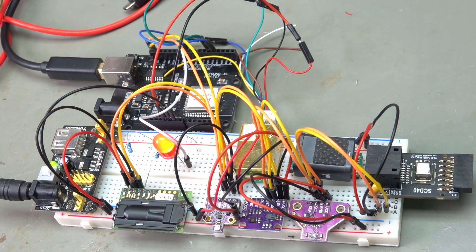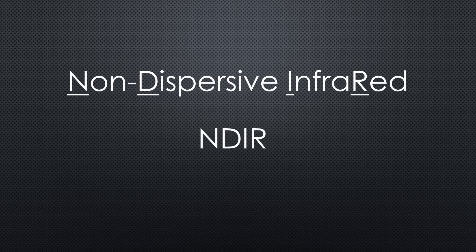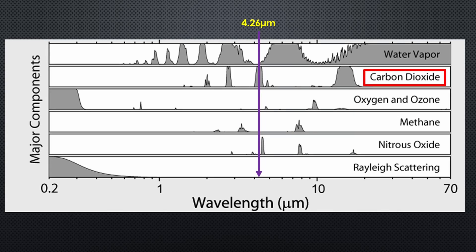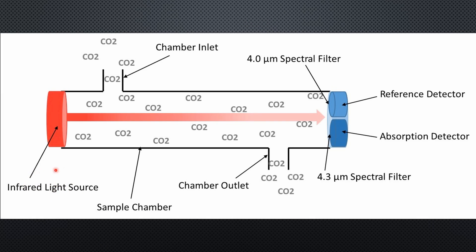All three sensors use the same principle, non-dispersive infrared, or NDIR. They use the fact that CO2 blocks light with a wavelength of around 4.26 micrometers. A diode emits infrared light, which travels through the air towards a detector, usually with a filter for those 4.26 micrometers in front of it. That's all.